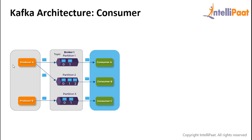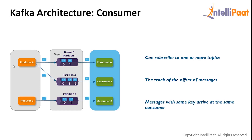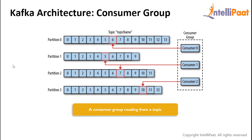Now let's look at the working of consumers. The consumer can subscribe to one or more topics and reads the messages in the order they were produced. It keeps track of the messages it has already consumed by keeping track of the offset of messages. Messages with the same key basically arrive at the same consumer. Consumers work as part of a consumer group, which is one or more consumers that work together to consume a topic. The group ensures that each partition is consumed by only one member. For example, there are three consumers in a single group consuming a topic — two consumers are working on one partition each, while the third is working on two partitions.